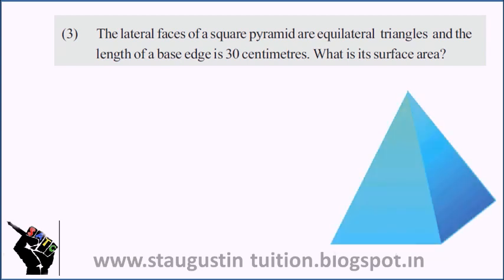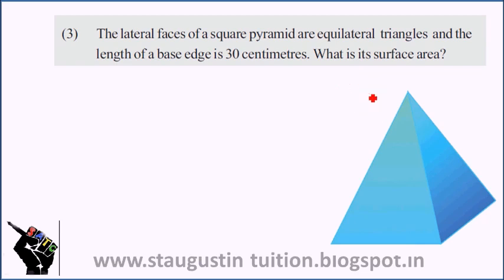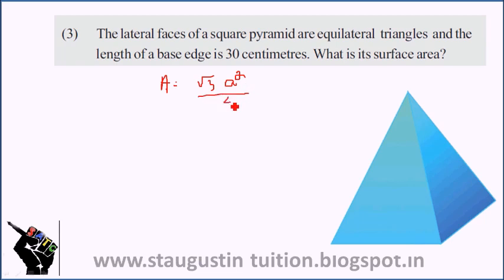Here is an equilateral triangle — all sides are the same, all sides are A. The area of an equilateral triangle is (√3 × A²) / 4.